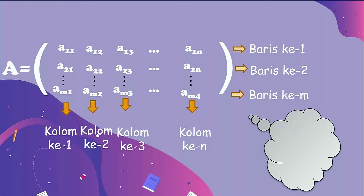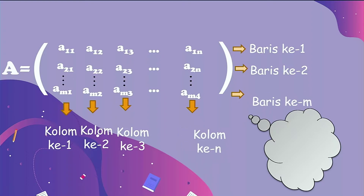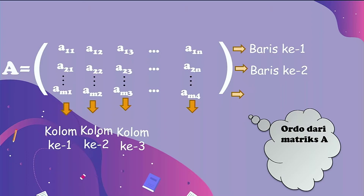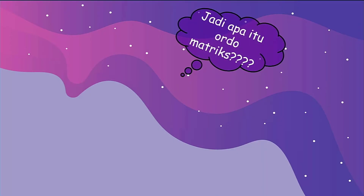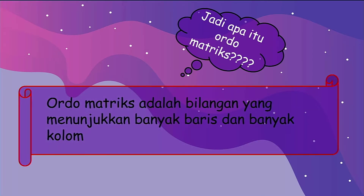Sekarang matriks saya ganti dengan menggunakan huruf. Jadi notasinya menggunakan huruf besar, elemen-elemennya menggunakan huruf kecil: ada a₁₁, a₂₂, a₂₃. Sampai di situ ada baris M, sedangkan untuk kolomnya ada kolom N. Maka inilah yang disebut dengan ordo. Ordo dari matriks A itu, karena barisnya ada M dan kolomnya ada N, maka matriks A berordo M × N.